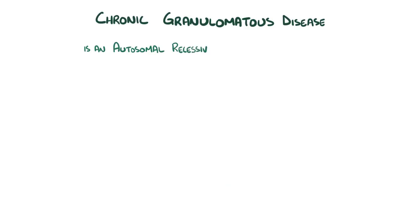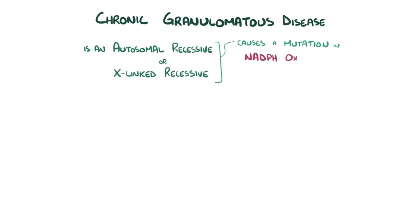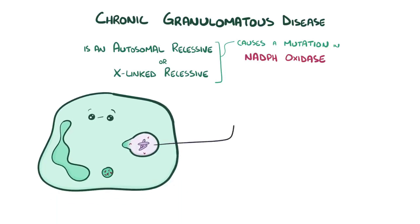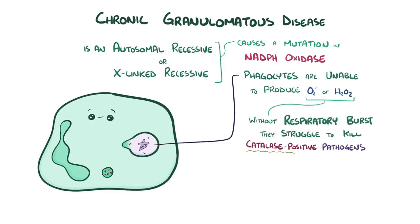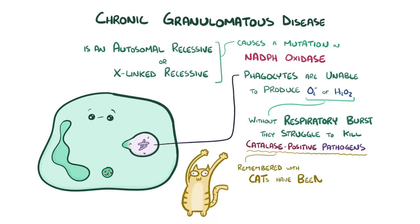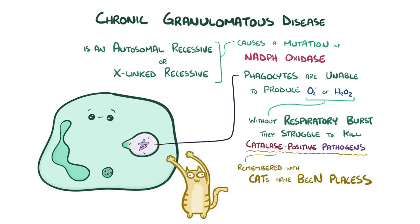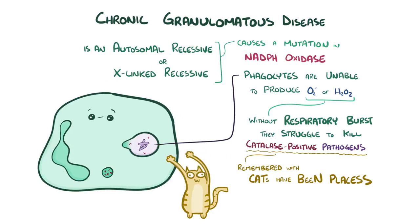As a quick recap: chronic granulomatous disease is an autosomal recessive or X-linked recessive disease that causes a mutation in NADPH oxidase. As a result, phagocytes are unable to create superoxide and hydrogen peroxide, and without this respiratory burst, they struggle to kill catalase-positive pathogens — remembered with the mnemonic 'CATS HAVE BEEN PLACES' — including Burkholderia, Nocardia, Pasteurella, Listeria, Aspergillus, Candida, E. coli, Staphylococcus, and Serratia.